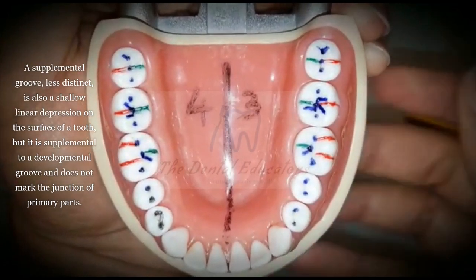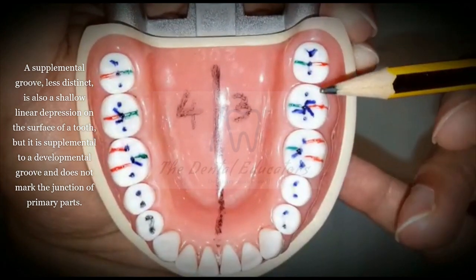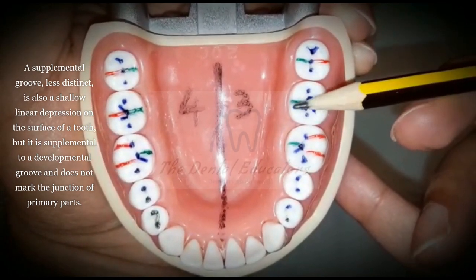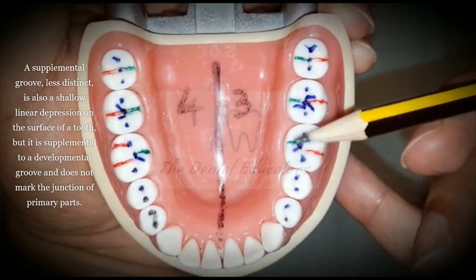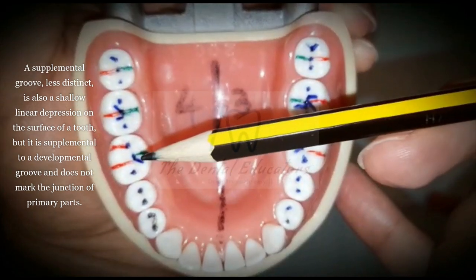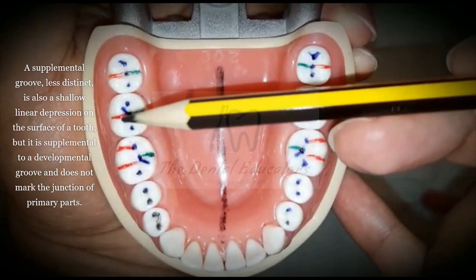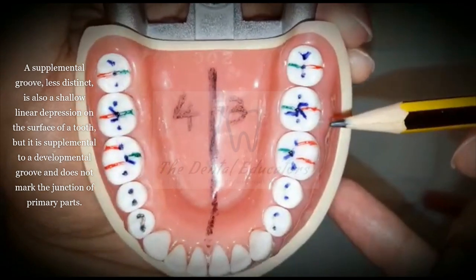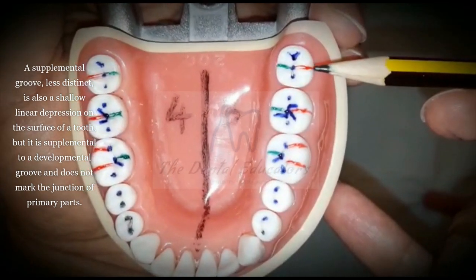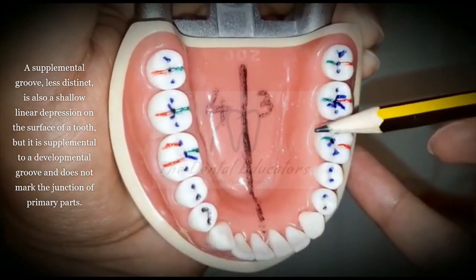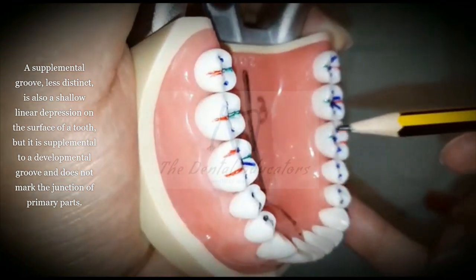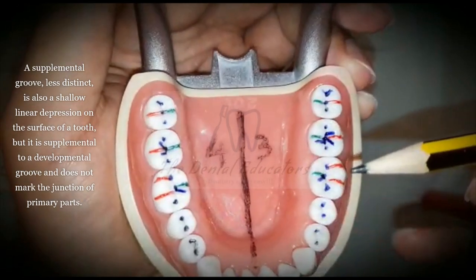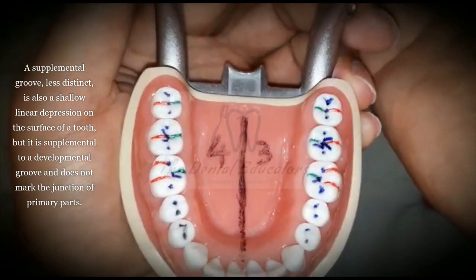In the mandibular arch, supplemental grooves are also present extensively in the molars of both the third and fourth quadrants. Red linings extending on the buccal surface are referred to as buccal grooves, while green linings extending on the lingual surface are referred to as lingual grooves.